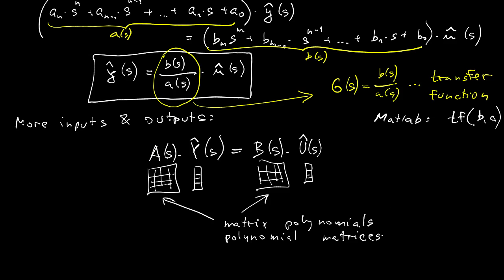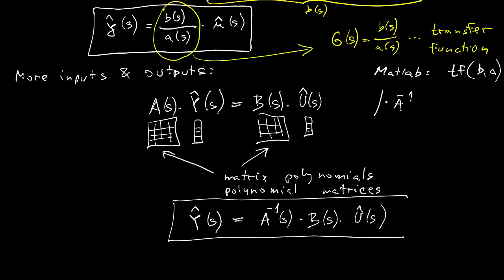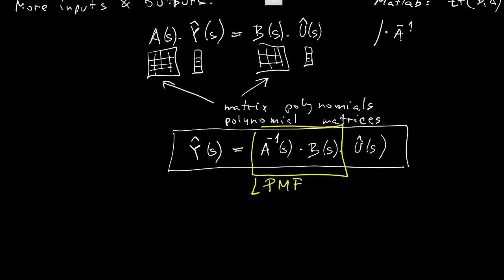Now let's finish with expressing the output as a function of the input. So we need to multiply both sides by the inverse of A, and what we obtain is again a fraction of polynomials, but this time matrix polynomials, or also called left polynomial matrix fraction. So this is the perfect analog of the transfer function as a fraction of two polynomials.